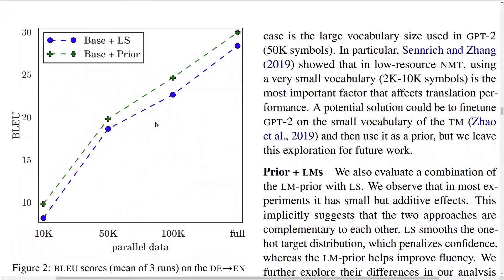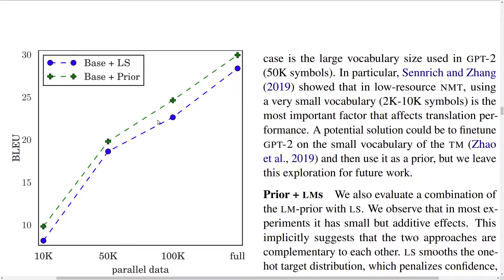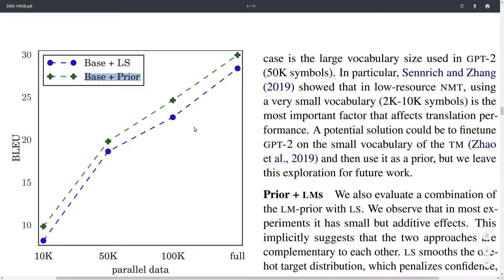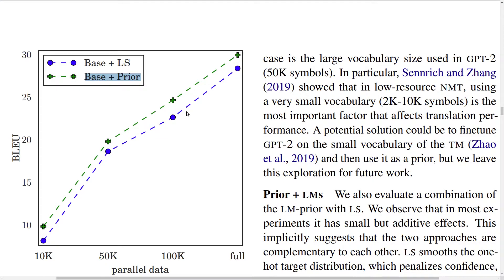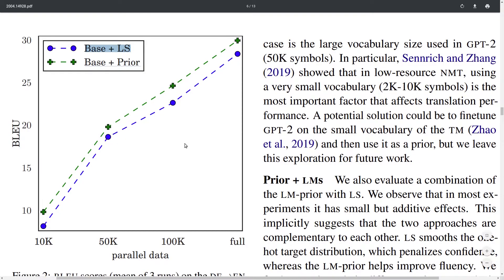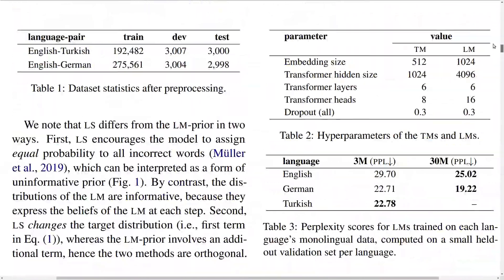A plot shows performance versus the amount of parallel data used to train the NMT model on the x-axis, with BLEU score on the y-axis, comparing base plus label smoothing to base plus Language Model Prior. Consistently, whether using 10,000 parallel sentences or the full dataset of potentially a couple of million sentences, Language Model Prior is always more effective than label smoothing, giving a consistent boost in performance.